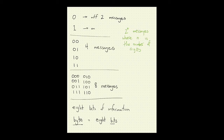When we have one digit, we have 2 to the 1 equals 2 messages. When we have two digits, 2 to the 2 equals 4 messages. When we have three digits, 2 to the 3 equals 8 messages. And so with a byte — if we have eight bits — we have 2 to the 8, which equals 256 possible messages.